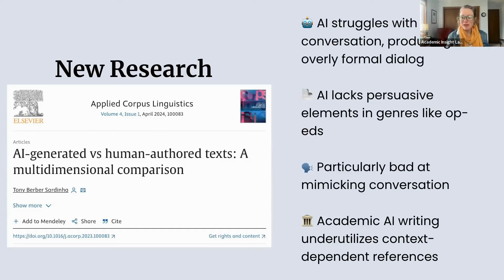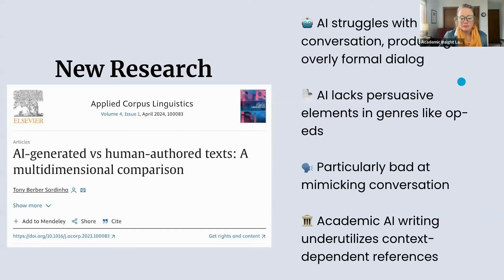Unfortunately, this is indicative of how long it takes to publish good scientific research — by the time we publish, the technology has moved on. Now we have GPT 4, Gemini 1.5, Claude 3, and I suspect some of these results would have been mitigated with these more advanced models. But regardless, the findings have important implications for AI detection.